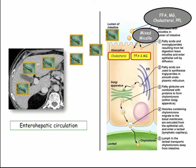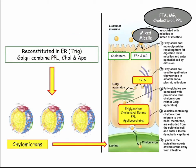Once absorbed in the intestine, the contents go into the endoplasmic reticulum and are made back into triglycerides — which is the craziest thing. The triglyceride then goes through the Golgi, where triglyceride, cholesterol, and phospholipids are combined. Then a small apolipoprotein is placed around it, which is important for passage into the lacteal — it won't leave without the apolipoprotein.